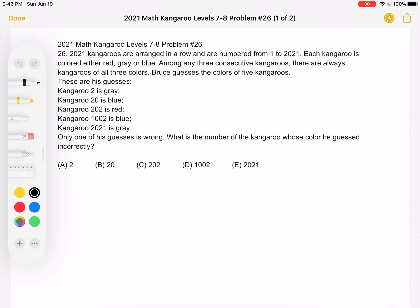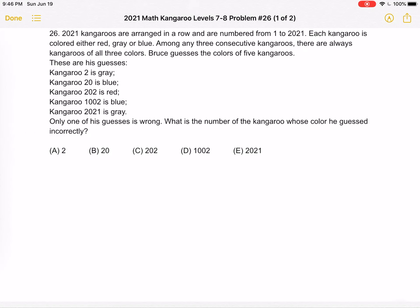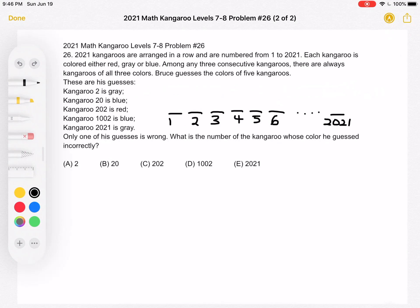A: 2, B: 20, C: 202, D: 1002, or E: 2021? This is the problem as it originally appeared on the test and here's where we'll be doing the solution.